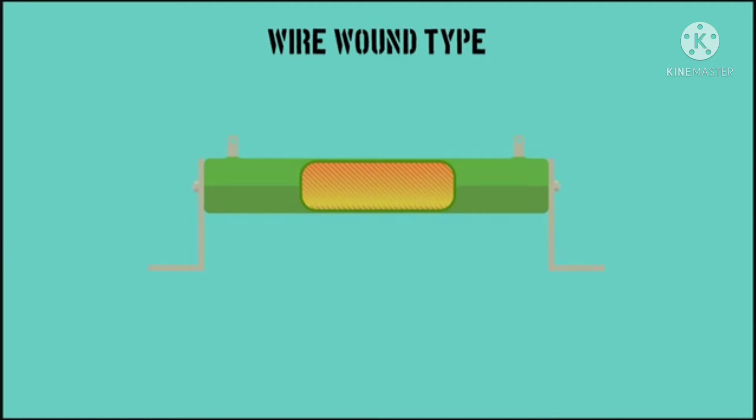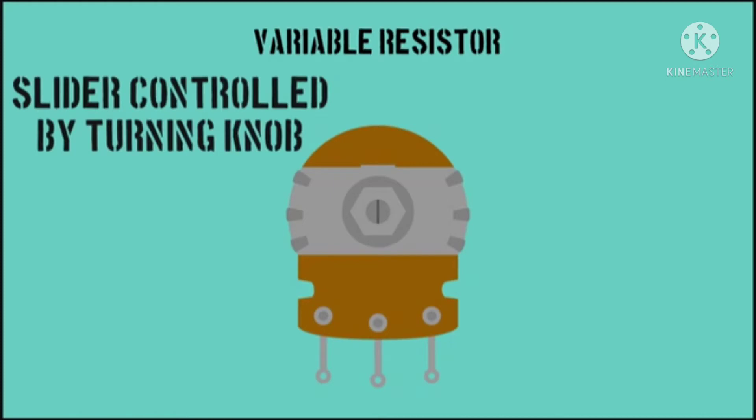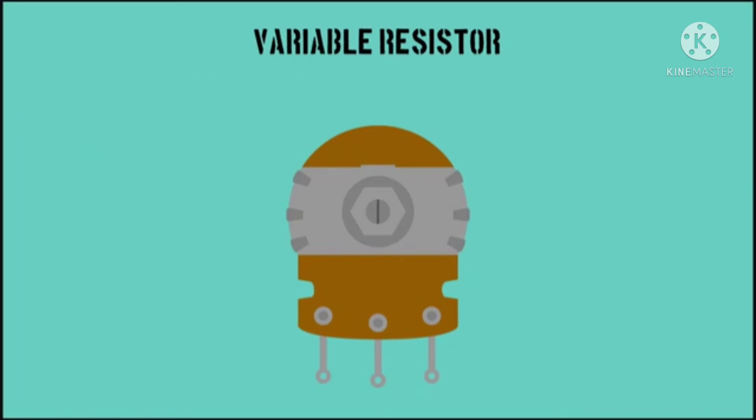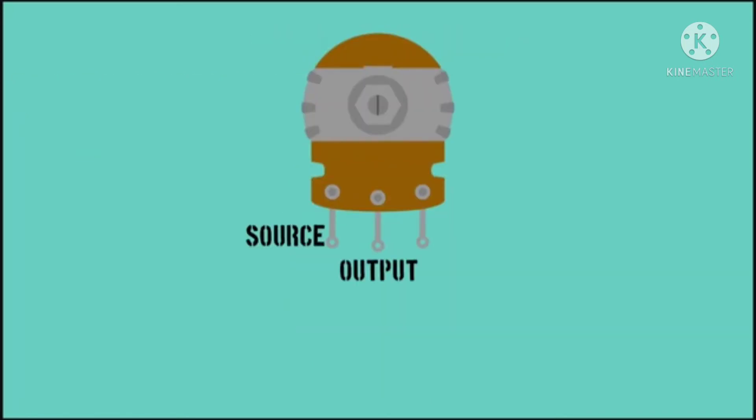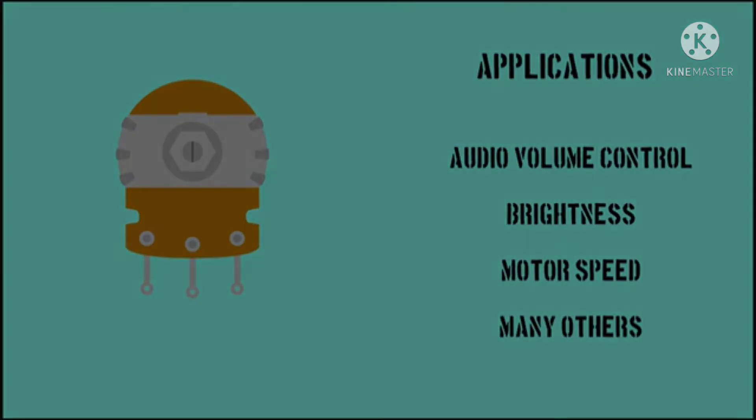Then, there are variable resistors, which have one resistor element and a slider that changes the position on the element, therefore changing the resistance. Typically, they have three leads: the first being the input, the second output, and the last ground. They control things like volume, brightness, or weight.